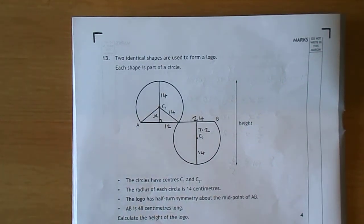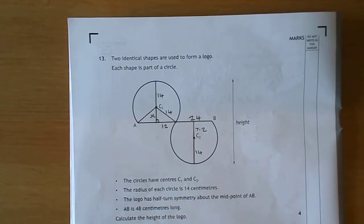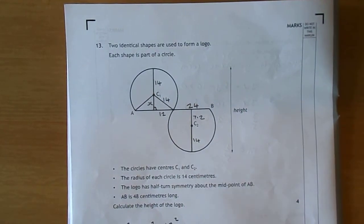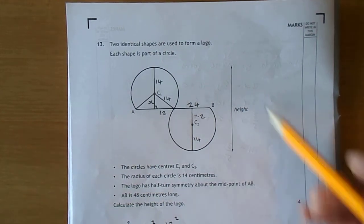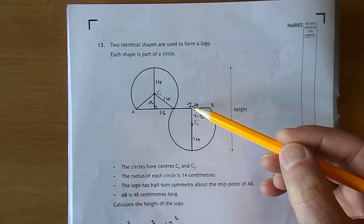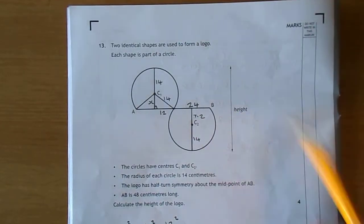This is the SQA 2017 National 5 Mathematics Paper 2, question 13. You're given two identical shapes to form a logo, each shape part of a circle. I've drawn some figures which I'll explain, and they want you to get the height of the logo. The idea is to get the height of one and just double it.